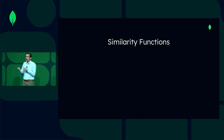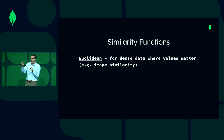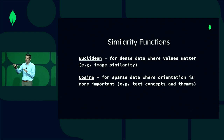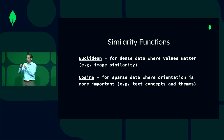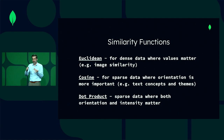Each one of these functions is good for a different type of use case. Euclidean is really good for dense data where specific values matter — for instance, image similarity, where it's really important that this pixel looks just like that pixel. Cosine is where sparse data and orientation is important — if you have text concepts or themes and want to find the distance between them, cosine is really good for that because one word can represent a lot about what a paragraph is about. Dot product is really good for sparse data where both the orientation and the intensity matter together.